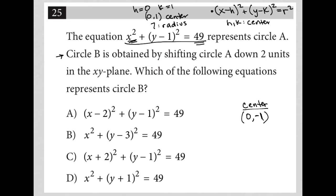Well, circle B, the radius didn't change, so it would still be 49 out here. 7 squared is still 49. All that changed was the center.